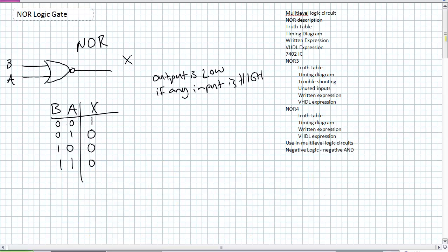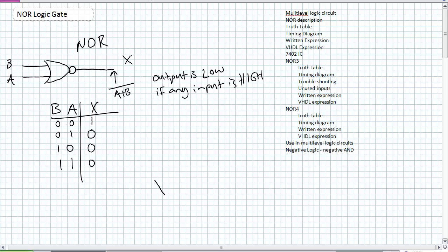What might the written expression for this be? Going back to our multi-level description: if that's A OR B, what is the output? It's A OR B, negated — the whole thing. So X equals (A OR B), the whole thing negated. Don't just negate A alone or B alone — the whole thing negated. That is a NOT OR. You can put parentheses on there if you want.